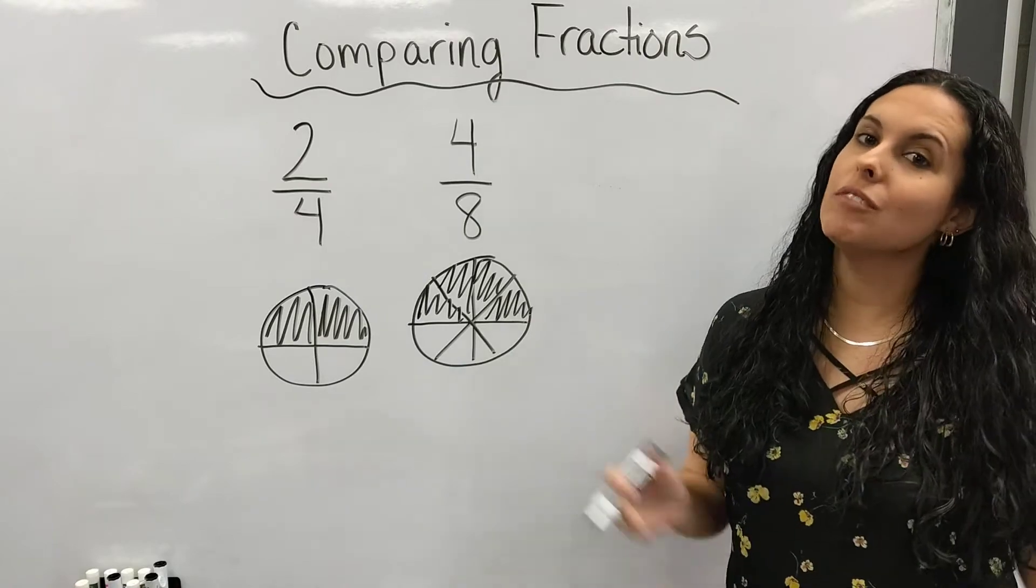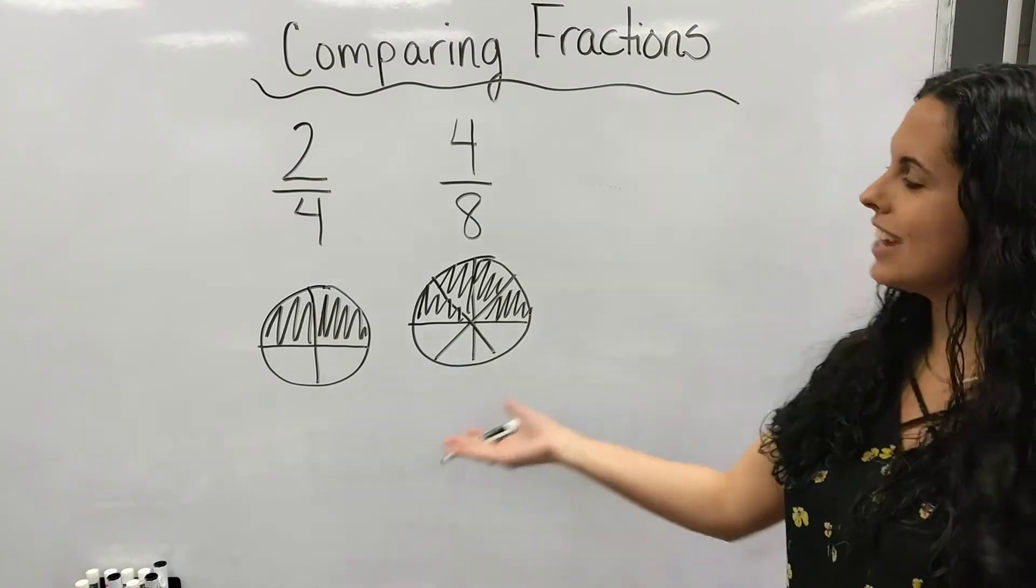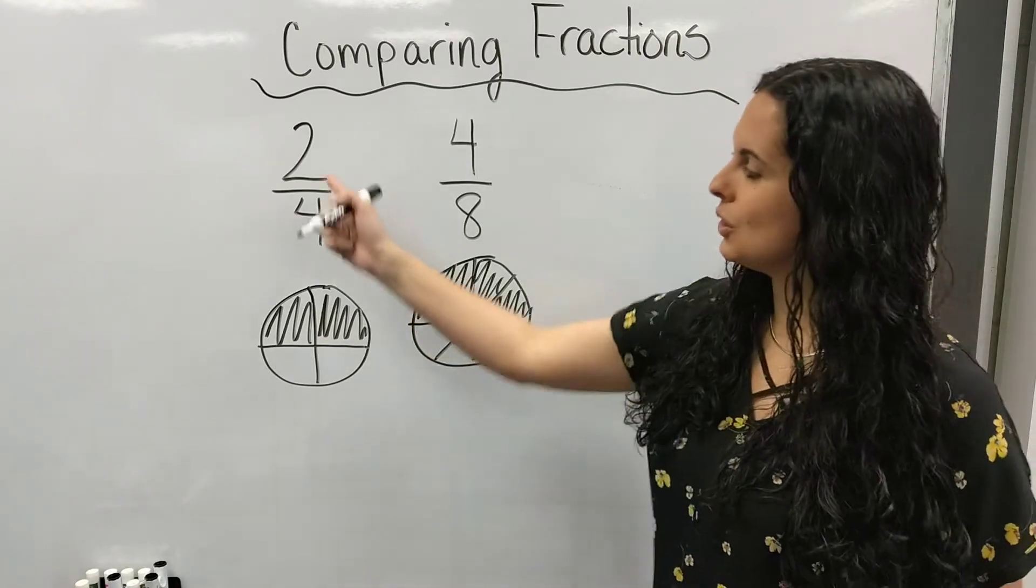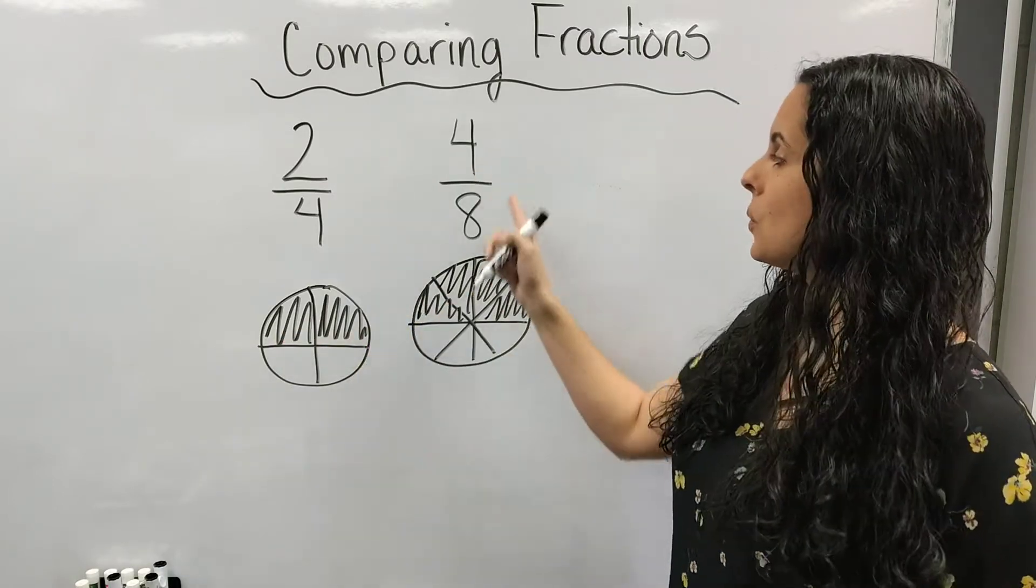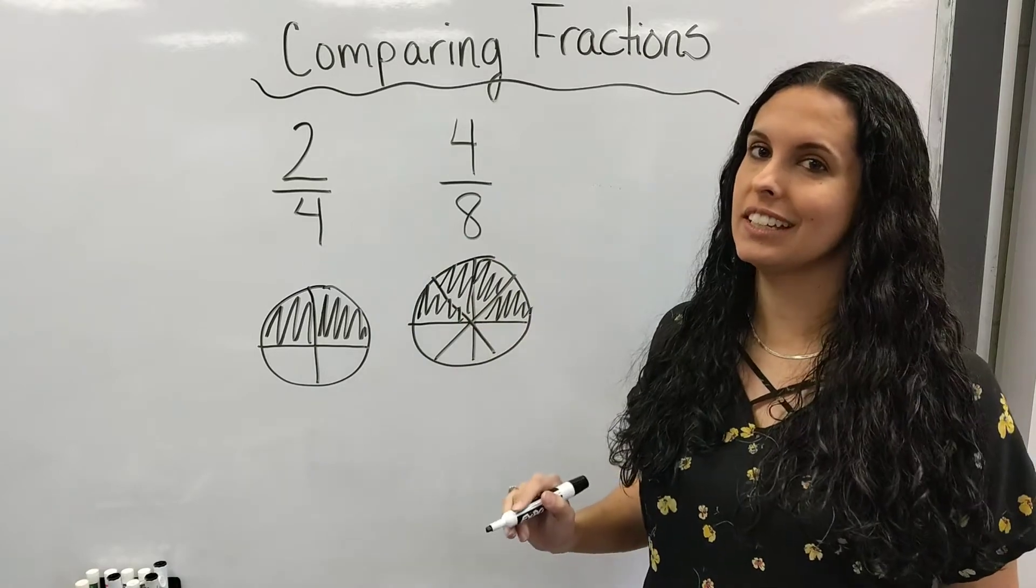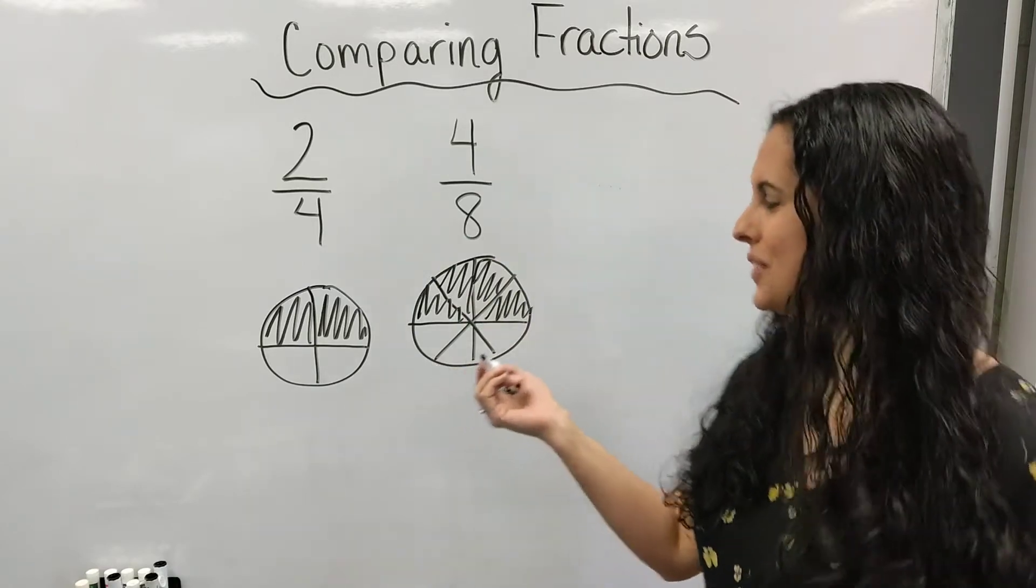Now that I'm looking at my model fractions, I can see that two-fourths is half of this circle shaded, and four-eighths is half of this circle shaded. They're equal to.